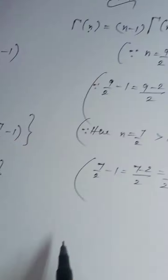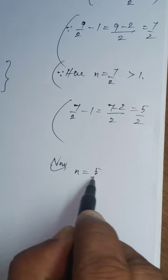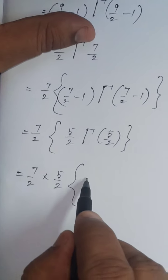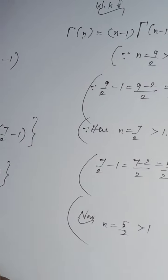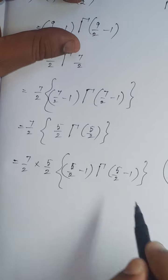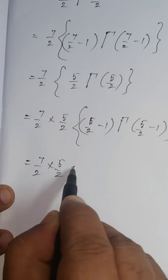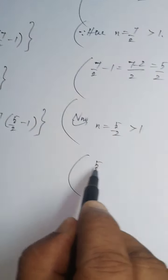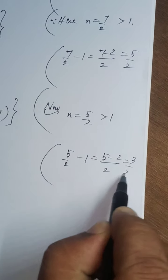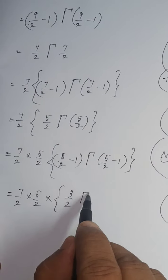For Gamma of 5 by 2, apply the same property again. Now n equals 5 by 2, which is also greater than 1. The formula is n minus 1 times Gamma of n minus 1. With n equal to 5 by 2, we get 7 by 2 into 5 by 2 into 5 by 2 minus 1. That is 5 minus 2 by 2, which equals 3 by 2. So we have 3 by 2 times Gamma of 3 by 2.